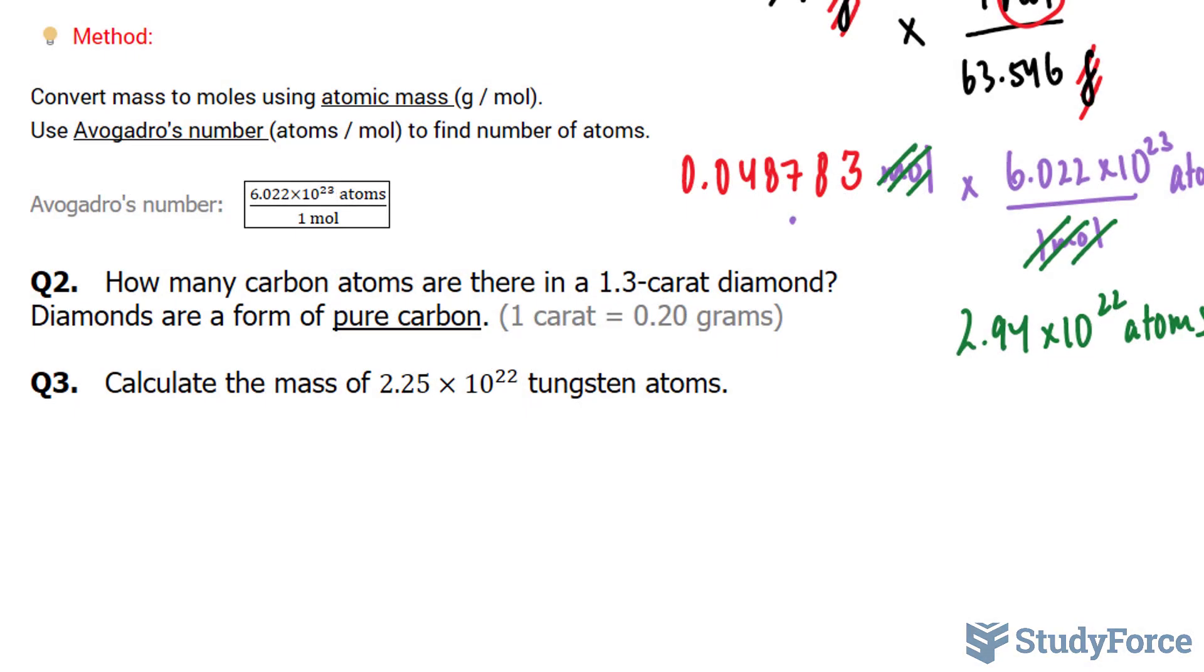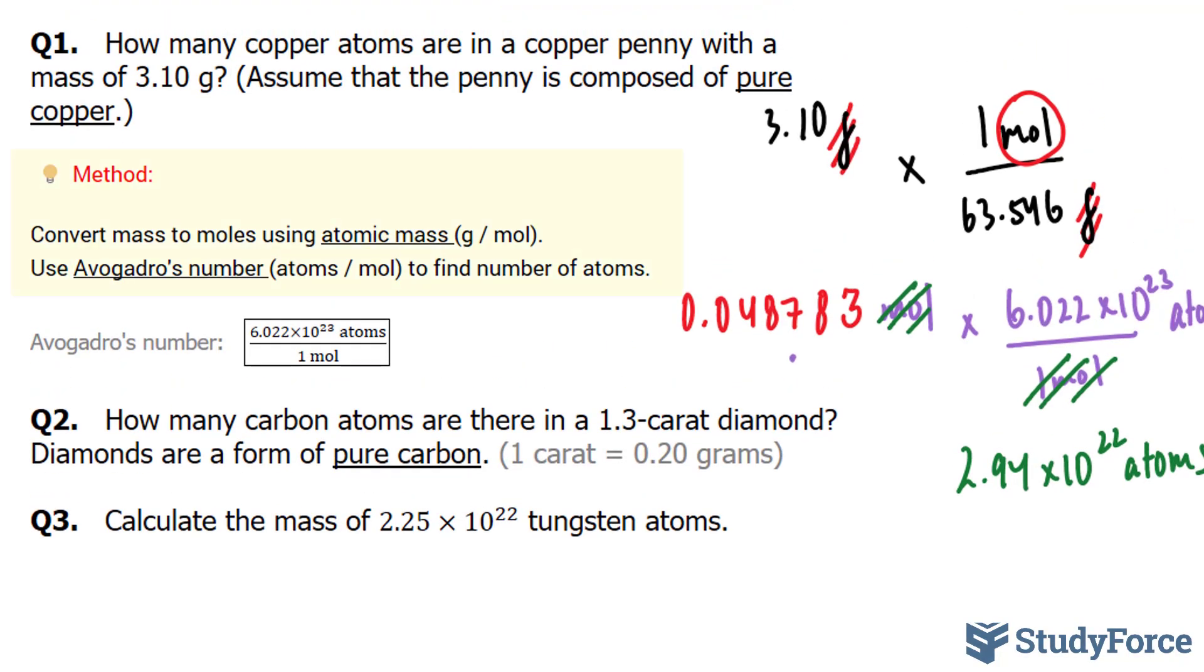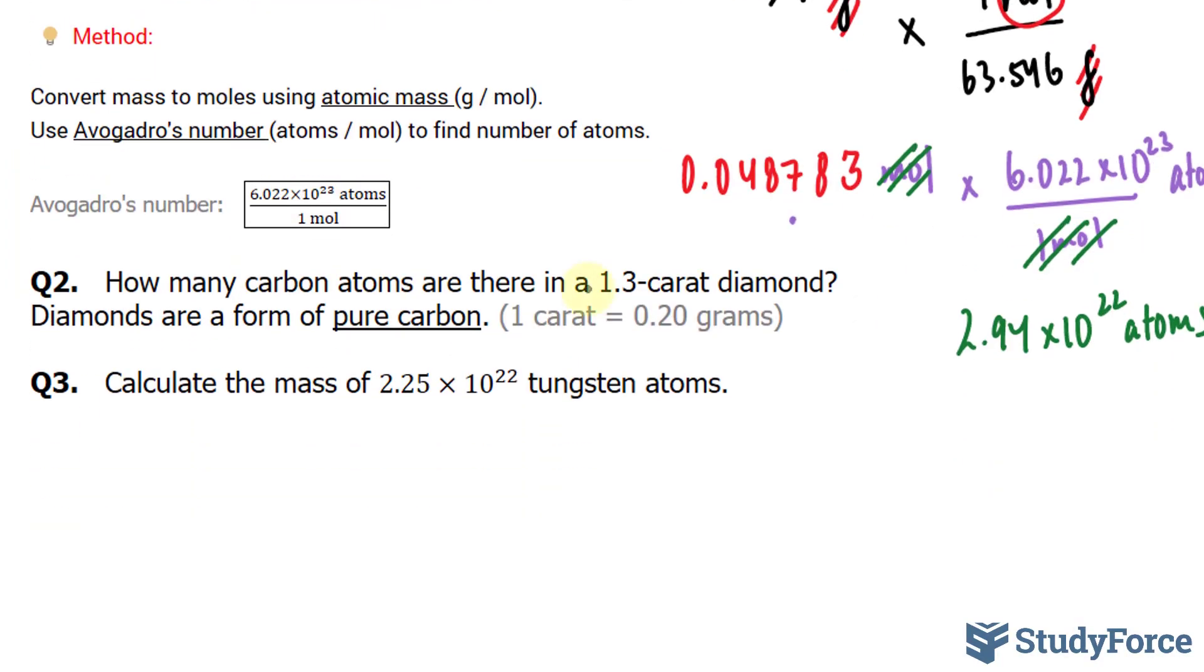To do this question, we'll be using the same method as in question 1. We need to convert the mass using the atomic weight and that will bring us to moles. Then we have to convert the moles using Avogadro's number so that we get the atoms. The only hurdle for this question is the fact that they gave us the mass in carats. So we have to convert 1.3 carats to grams.